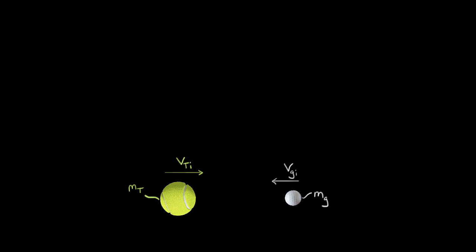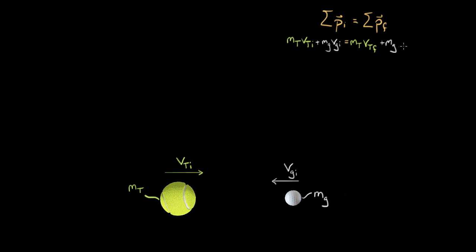Same way we did before, we're going to use conservation of momentum. The initial momentum is mt times vti, plus mg times vgi. You might think there should be a negative sign, but I'm letting vgi be the velocity — there's a hidden negative sign in there if the golf ball is going leftward, so I wouldn't want to add another negative. That equals the final momentum: mt times vt_final, plus mg times vg_final. It's good to keep track of your unknowns — the final velocities are the things we don't know.